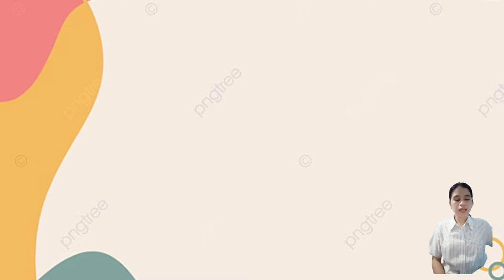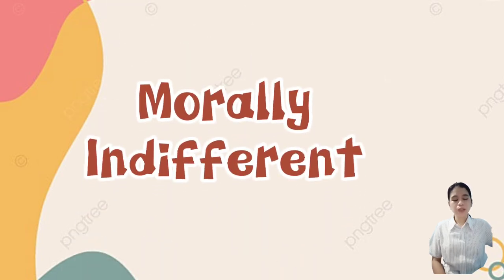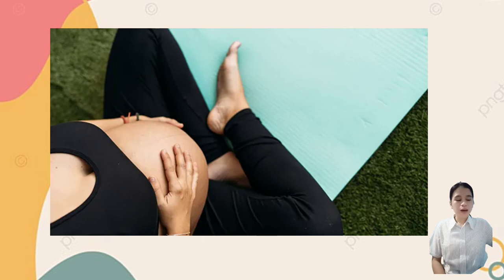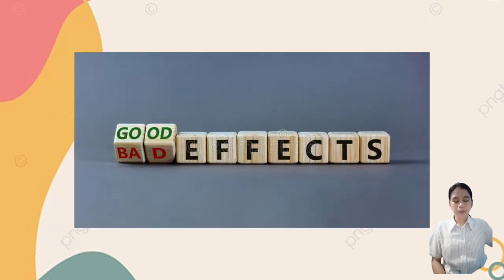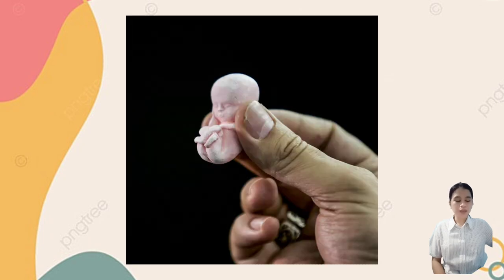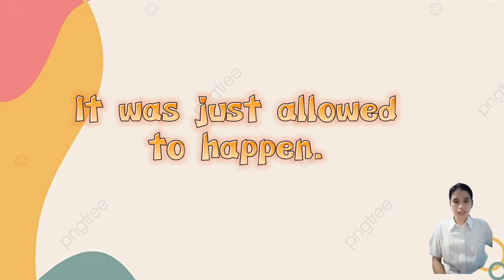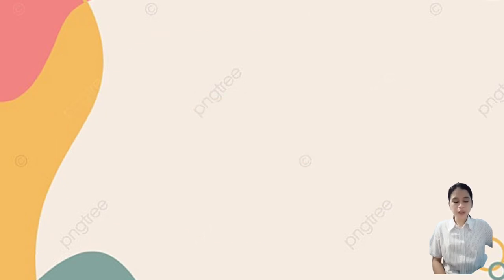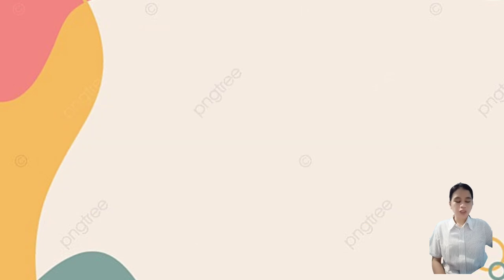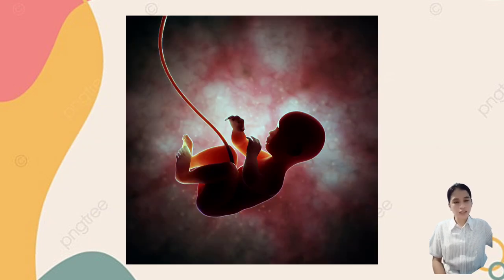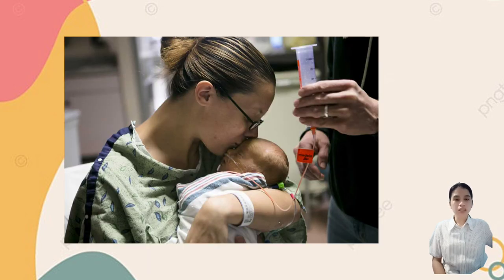This example satisfies principle two because the good effect — recovery of the pregnant woman — follows the action immediately, and even if the fetus dies after removal of the cancerous uterus, these evil effects occur simultaneously with the good effect. It satisfies principle three because the abortion, the death of the fetus, was not intended — it was just allowed to happen. It satisfies principle four because there is a sufficient reason for allowing the evil effect: if we don't remove the cancerous uterus, we save neither life.